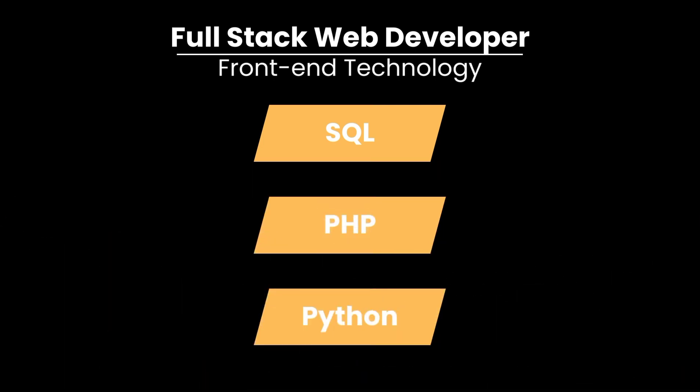Python is a high-level, general-purpose language. It can be used on a server to create web applications, for mathematics, and for server scripting. It connects to databases to read and manipulate files. Python was designed for readability and runs on an interpreter system. It can also be used in a procedural, object-oriented, or functional way.